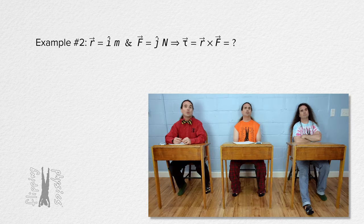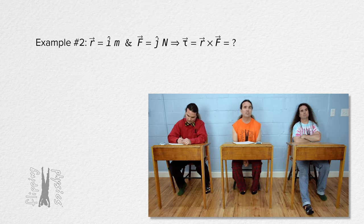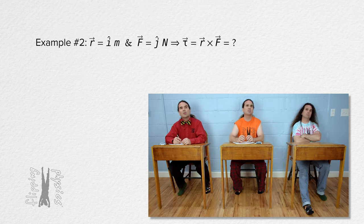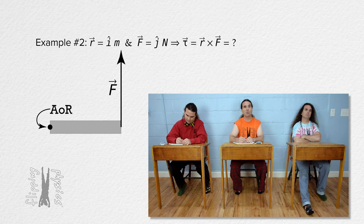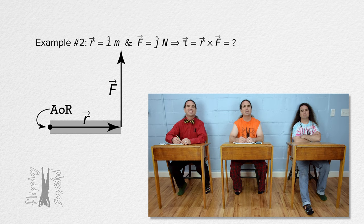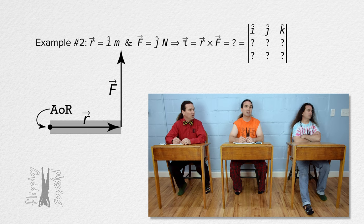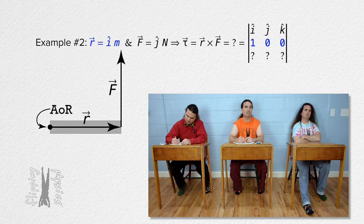Bobby, please work on this one. Sure. For example 2, the position vector equals unit vector i meters — so the position vector is one meter in the positive x direction. And the force vector equals unit vector j newton. So there's an object with an axis of rotation and a force of one newton is being applied in the positive y direction, one meter in the positive x direction from that axis of rotation. We are solving for the torque caused by that force, which equals the cross product of the position vector and the force vector. We set up the 3 by 3 determinant matrix with unit vectors i, j, and k in the first row. The position vector is one meter in the x direction only: 1, 0, 0. The next row for the force is 0, 1, 0.